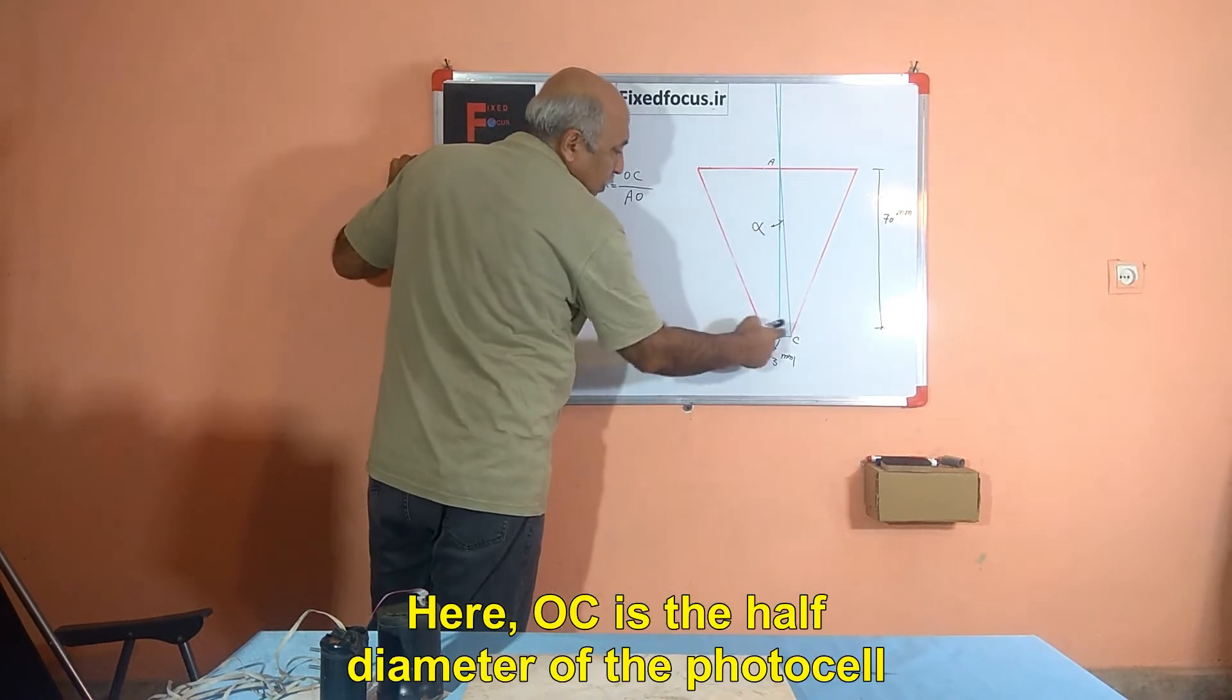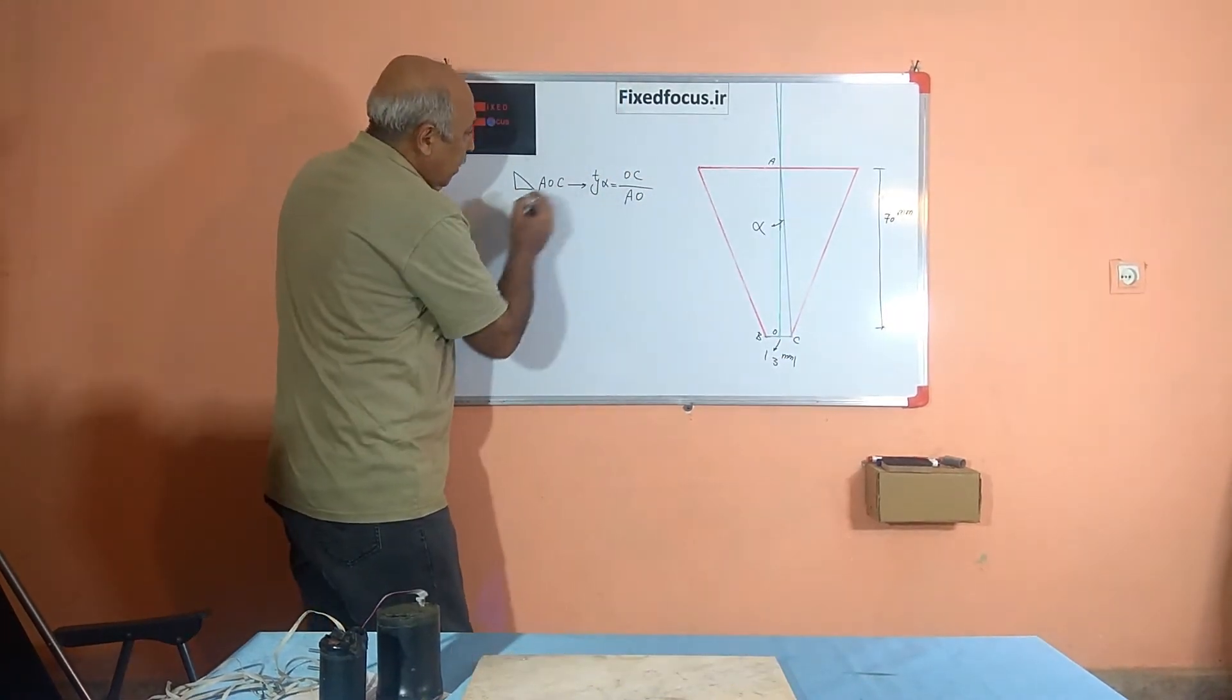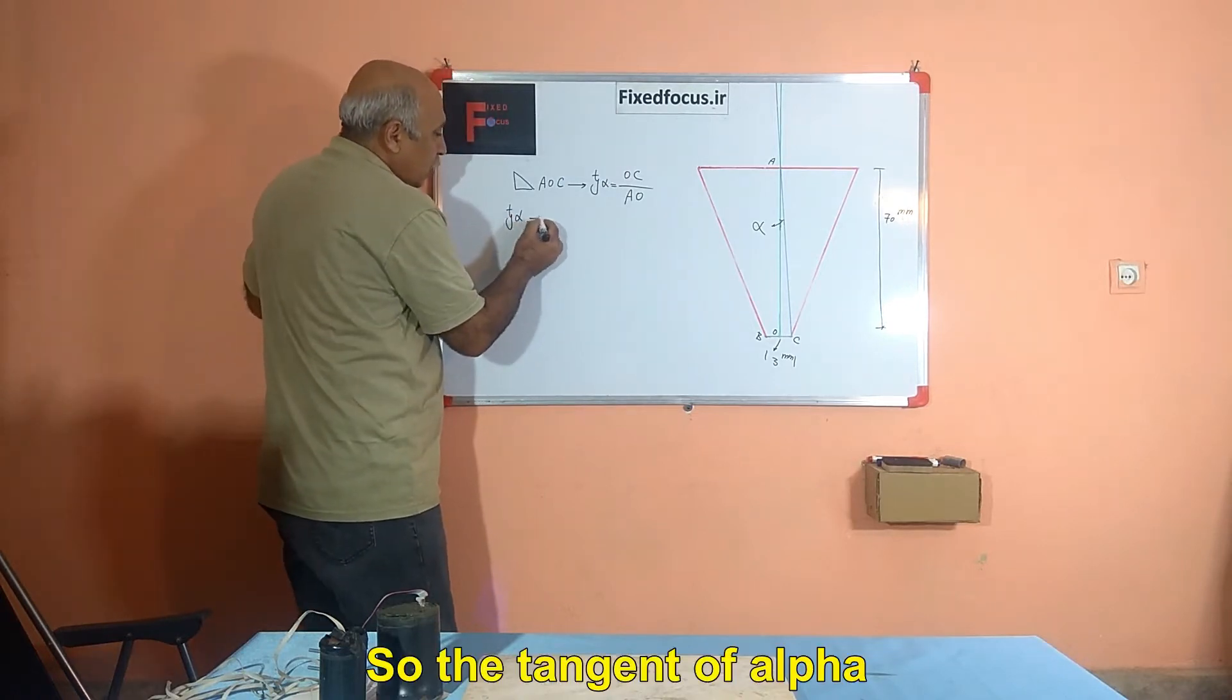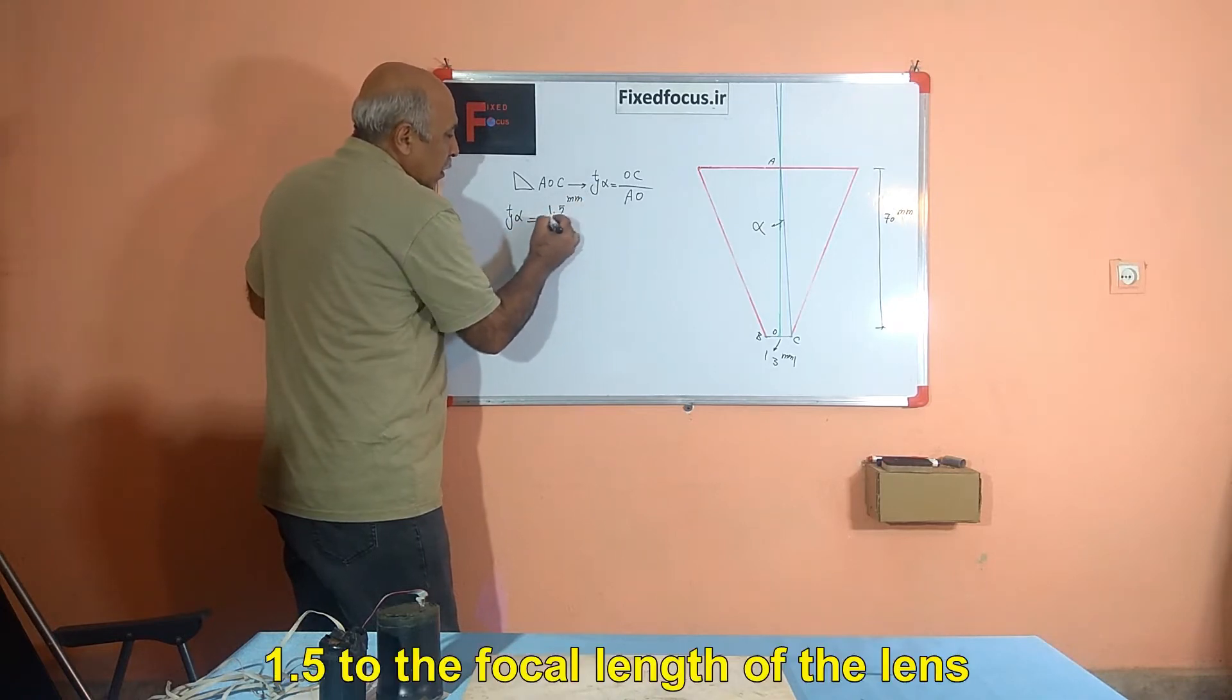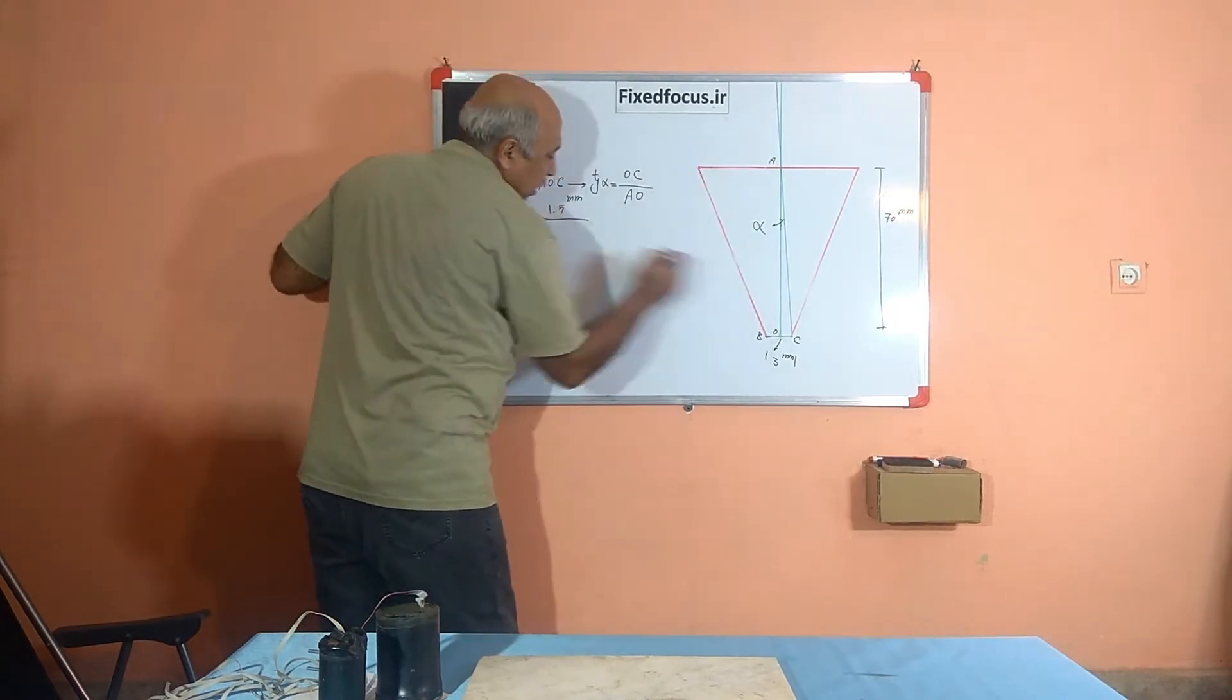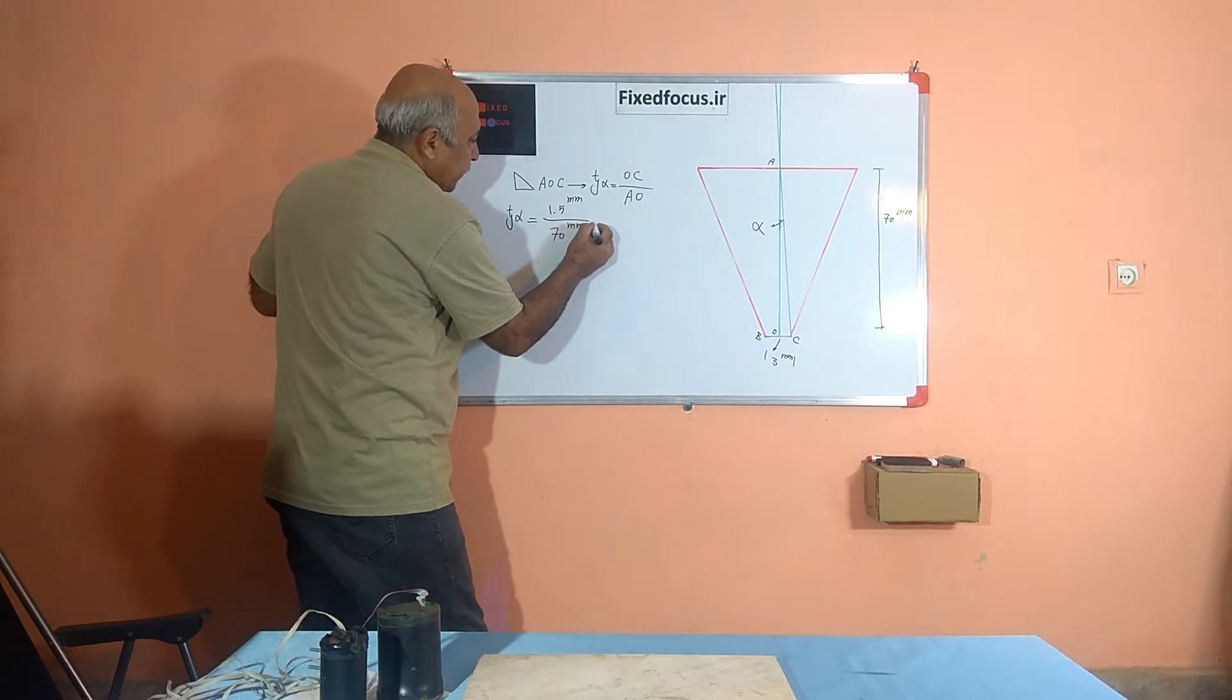Here, O, C is the half diameter of the photocell. That is 1.5 millimeters. So, the tangent of alpha is equal to 1.5 to the focal length of the lens. So, we have a tangent of 1.5 to 70.